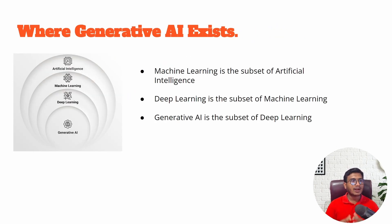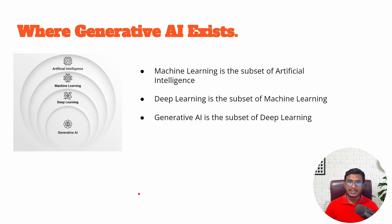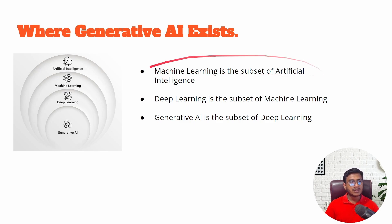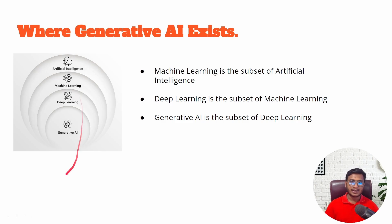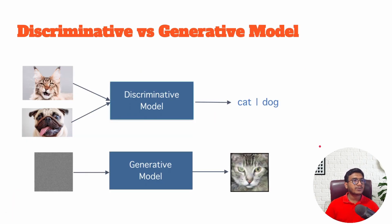Those who have already studied artificial intelligence, machine learning, and deep learning may have already seen this Venn diagram. Machine learning is a subset of artificial intelligence, deep learning is a subset of machine learning, and Generative AI is a subset of deep learning. This is the complete Venn diagram of the complete artificial intelligence landscape.